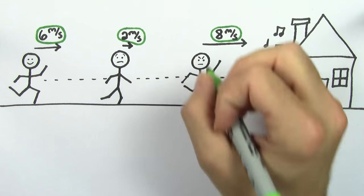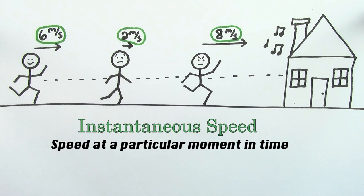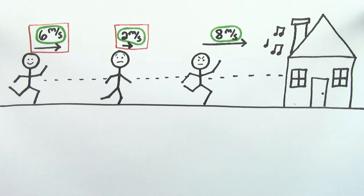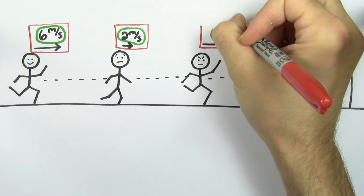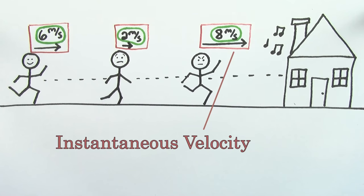These numbers are values of the instantaneous speed. The instantaneous speed is the speed of an object at a particular moment in time. And if you include the direction with that speed, you get the instantaneous velocity. In other words, 8 meters per second to the right was the instantaneous velocity of this person at that particular moment in time.